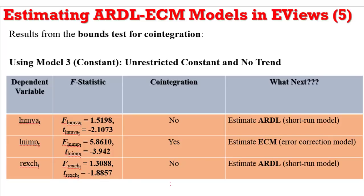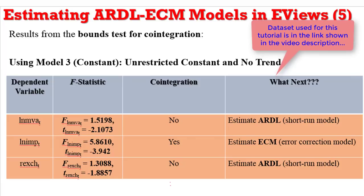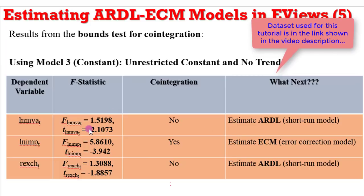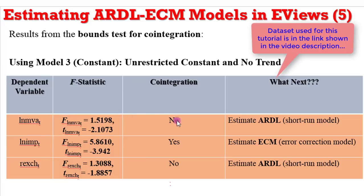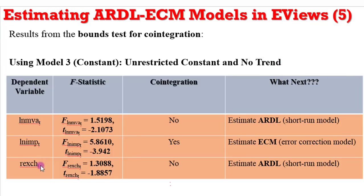From Crunch Econometrics, thank you for joining me on our series on ARDL and Error Correction Model. Today we are going to look at how we can estimate the short run model and the error correction model. From the last tutorial, we did the bounds test. In that video I showed you how the bounds test was conducted on three variables. When the log of MVA was a dependent variable there was no co-integration, so all we have to do is estimate the ARDL model. Same thing for the real exchange rate as a dependent variable — there is no co-integration, so only the short run model will be estimated. The only exception was when the log of imports was a dependent variable — we observed co-integration, so for that we are going to estimate the error correction model.